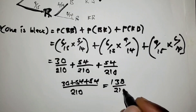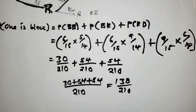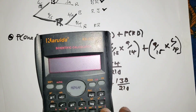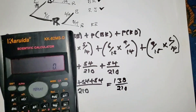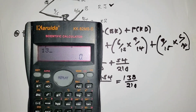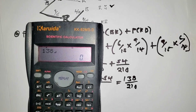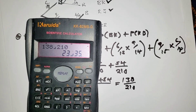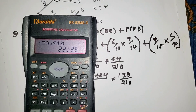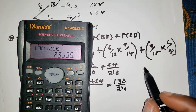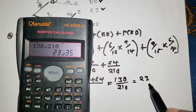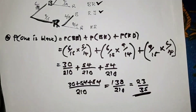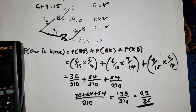Since this is Mathematics Paper 2, you can use your calculator. Punching in 138 over 210 reduces the fraction, giving us 23 over 35. So the answer to part A is 23/35. That's three marks.